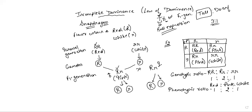In Mendel's monohybrid cross, the intermediate situation was not seen anywhere. But here we can see dominant, recessive, and intermediate expressions. We can explain this on the molecular biology basis. When we talk at the genetic level — talking about genes — we can explain how this intermediate character is coming.